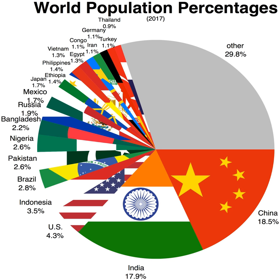For instance, the United Kingdom is considered as a single entity while the constituent countries of the Kingdom of the Netherlands are considered separately. In addition, this list includes certain states with limited recognition not found in ISO 3166-1. Also given in percent is each country's population compared with the population of the world, which the United Nations estimates at 7.66 billion as of today.